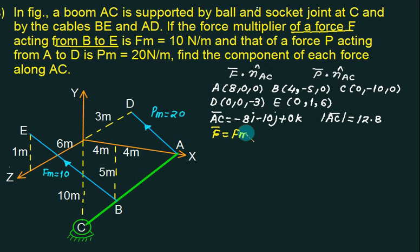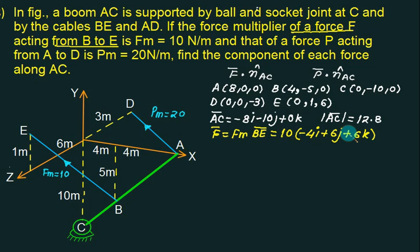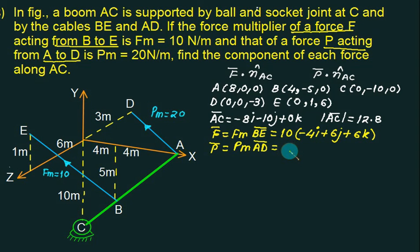F bar is directed from B to E, so F bar equals F_m into BE bar. F_m is 10. BE = E minus B = (0−4)i + (1−5)j + 6k = −4i − 4j + 6k. Next, P bar is directed from A to D. P_m is 20. AD = D minus A = (0−8)i + (0−0)j + (−3−0)k = −8i + 0j − 3k.